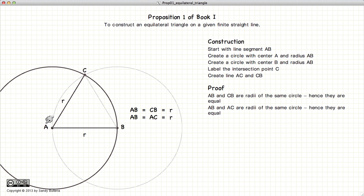If we look at the circle with A as the center, AC and AB are radii of the same circle and hence are equal in length.